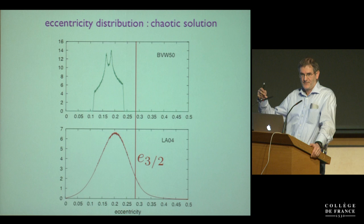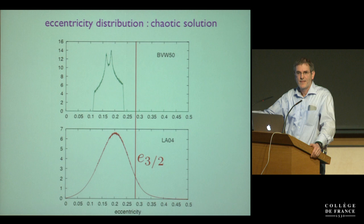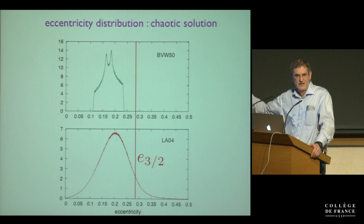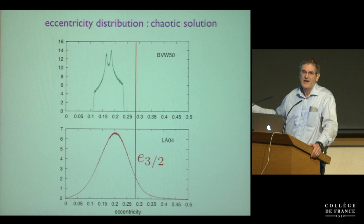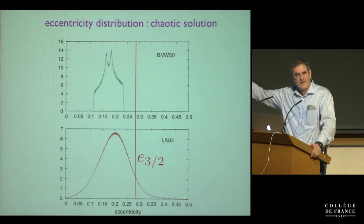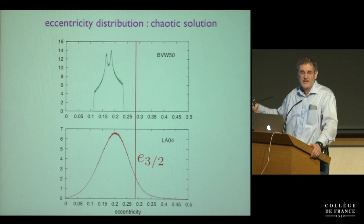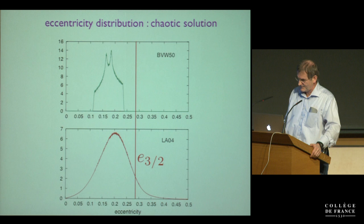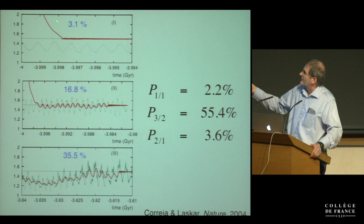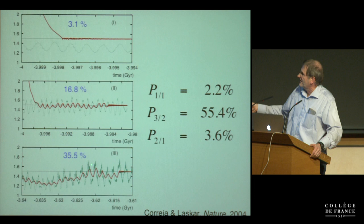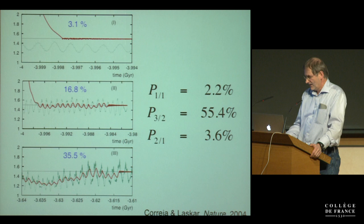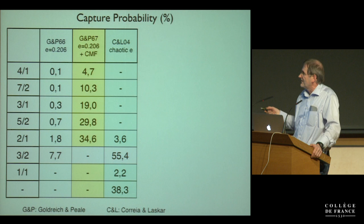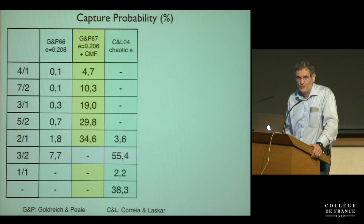With just direct trapping the probability is only 3.3 percent, but if you account for multiple resonance crossings driven by eccentricity excursions, the probability of being trapped in the 3:2 reaches 55 percent. When we included core-mantle friction, we received criticism that it reduces this probability by trapping Mercury earlier in the 2:1. However, resonances can also be destabilized if the eccentricity goes to very low values, which shrinks the resonance and can cause escape.